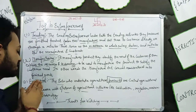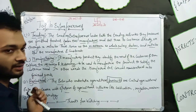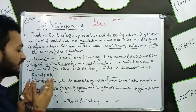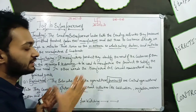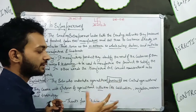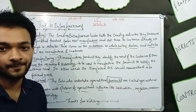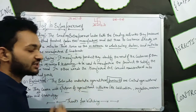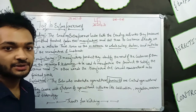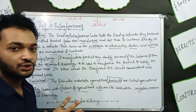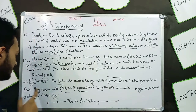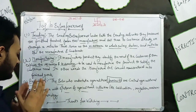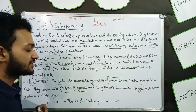Next we have the agricultural entrepreneurs. The agricultural entrepreneur is one who undertakes agriculture pursuits — meaning they engage in agricultural activities to achieve something. They are called agricultural entrepreneurs, and they cover a wide spectrum of agricultural activities.